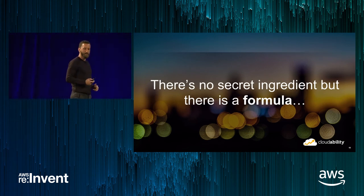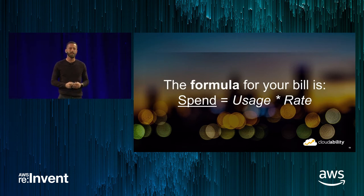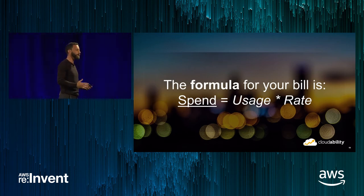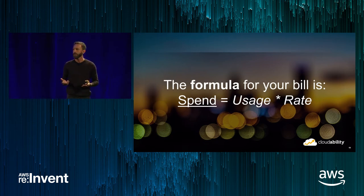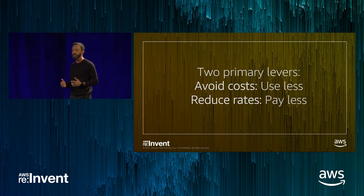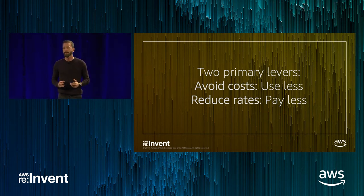Unfortunately, no secret ingredient. But there is a really basic formula that's important to keep in mind as you start to tackle spend optimization. The bill is composed of usage — how many instances, gigabytes, Lambda functions — times the rate you're paying for those pieces. This gives us two levers: avoid costs by using less, or reduce rates by paying less. The interplay between these two is really important, and the timing at which you do them is a source of constant debate.